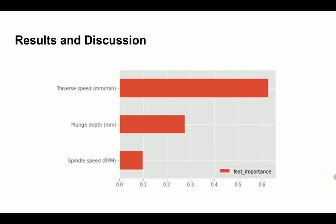We observed that the traverse speed has contributed more towards the output parameter, ultimate tensile strength. It is followed by the plunge depth, and the last contribution is by spindle speed.